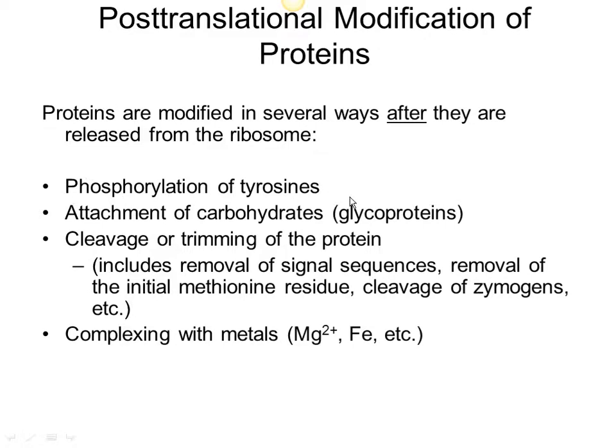One thing that's typically added to proteins is phosphate groups — we call that phosphorylation. It usually happens on amino acids called tyrosine. This sometimes will cause the protein to be in an inactive form, and then later those phosphate groups can be removed, which can activate the protein again. So it's a way of regulating proteins by adding and removing phosphate groups.